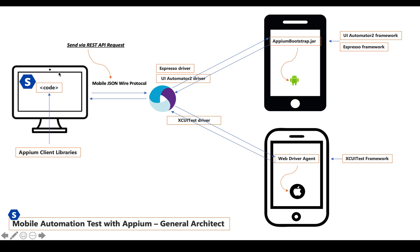Let me explain in detail about the general architecture. For example, when we write some code on our machine and run it, our target is to control the application on the device — for Android and for iOS. Appium works based on a client-server architecture. Our code will have the role of client, and we will have the Appium server. The client and server interact via REST API requests using the Mobile JSON Wire Protocol.